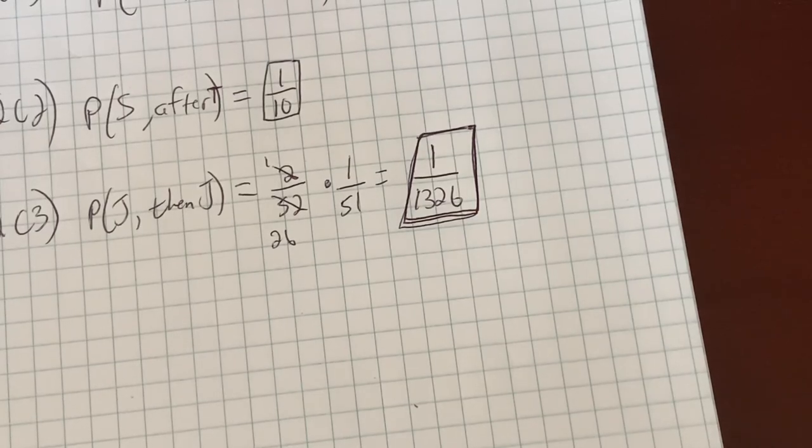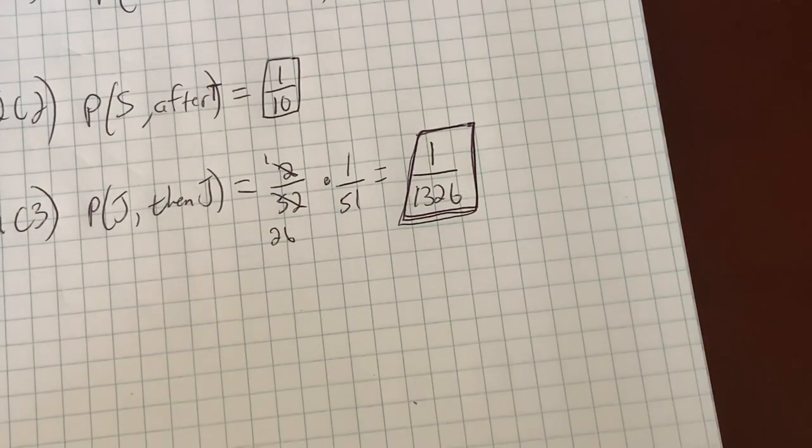So that's what you need to understand about probability. Never is it more evident that probability works, that the math works, than when you look at a casino. That's why they have the biggest, shiniest, most fancy buildings in the world because they always make money. Is there ever a guarantee? No. But over the long run, the math never lies.